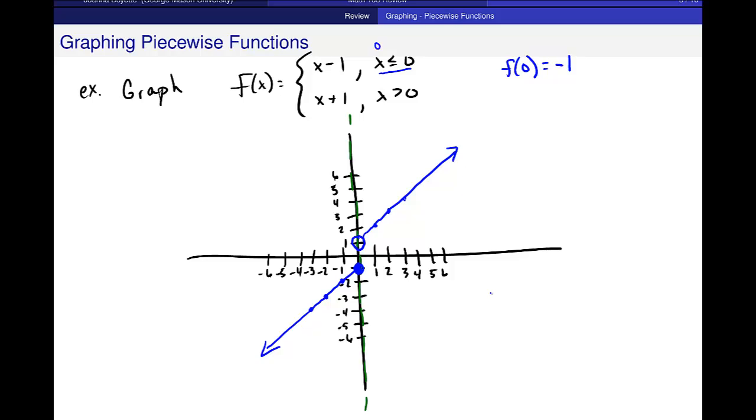Again, domain minus infinity to infinity. Range: this line to the left keeps going down, down, down, until we go to, I think, minus infinity down here. But this piece only goes up right here to negative 1. Then I have a gap, and my piece on the right starts almost at 1, not quite, and goes all the way up to infinity. So range occurs in these two pieces, actually. Minus infinity to negative 1, including that negative 1.